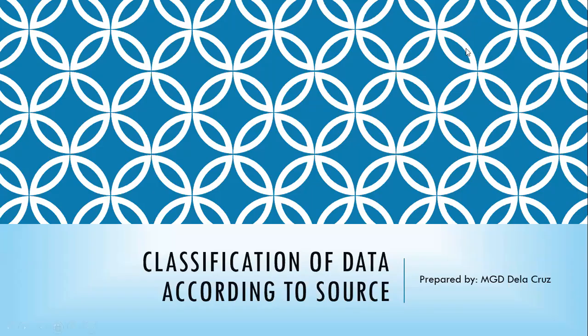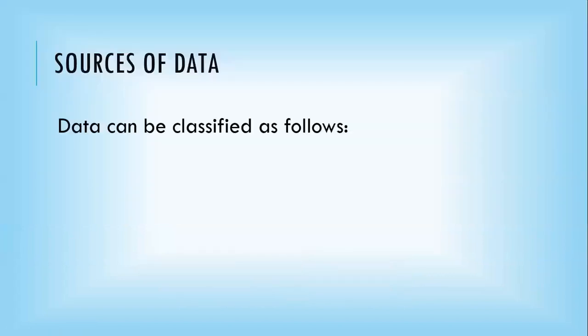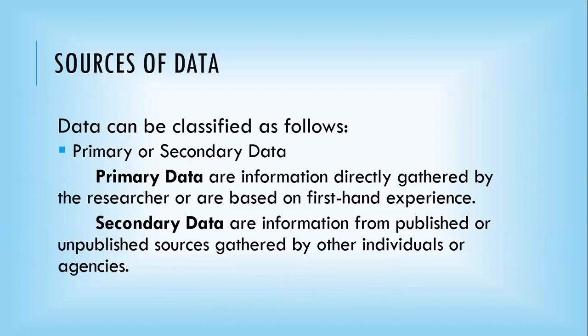Hello everyone. Today we are going to classify data according to the resource. Data can be classified as to whether they are primary or secondary. Primary data are information directly gathered by the researcher or are based on first-hand experience, while secondary data are information from published or unpublished sources gathered by other individuals or agencies.